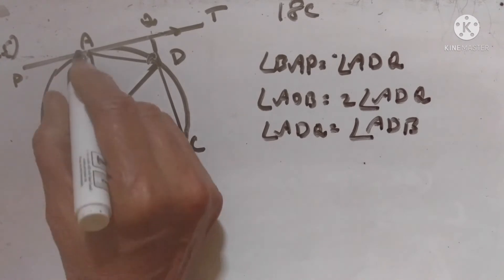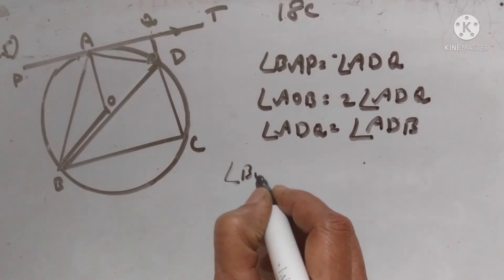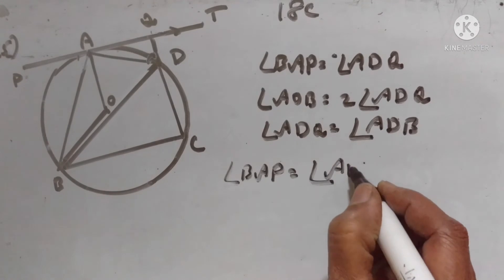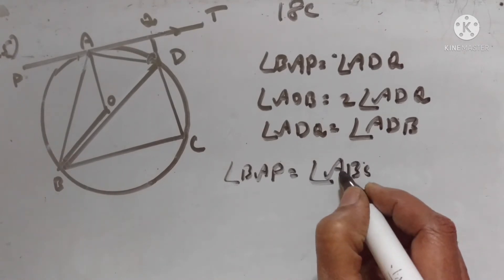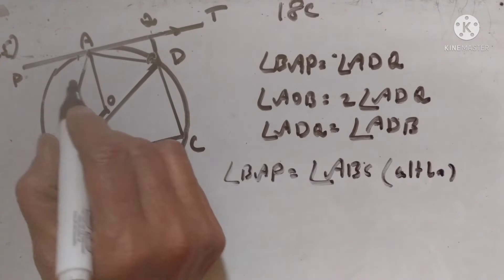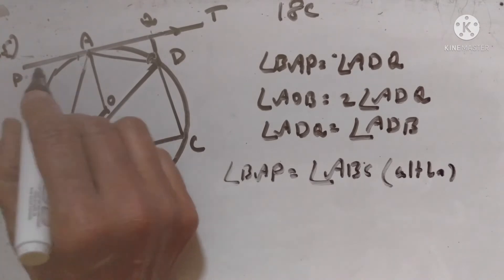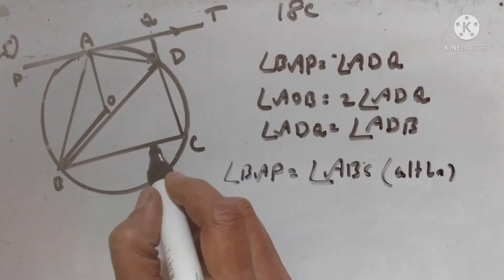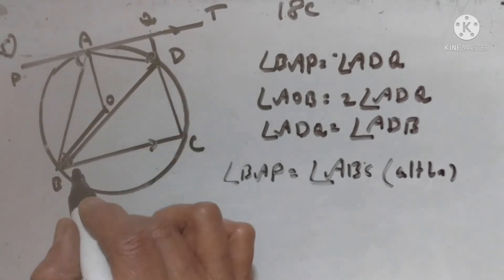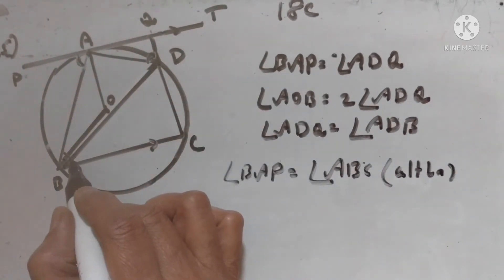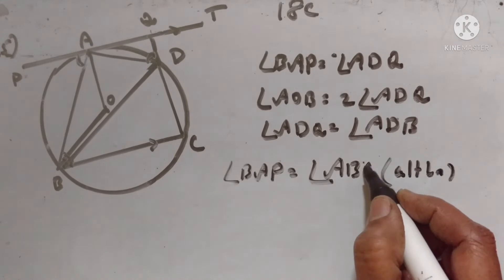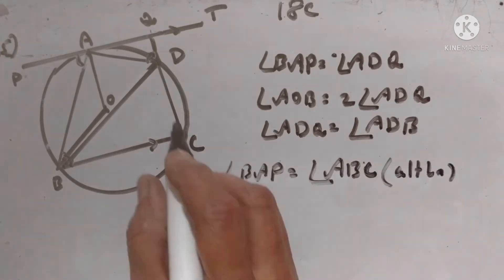Angle BAP is equal to angle ABC. Why? Alternate angles. It is given that PAT is parallel to BC. Therefore, the alternate angles, angle BAP and angle ABC, are equal.